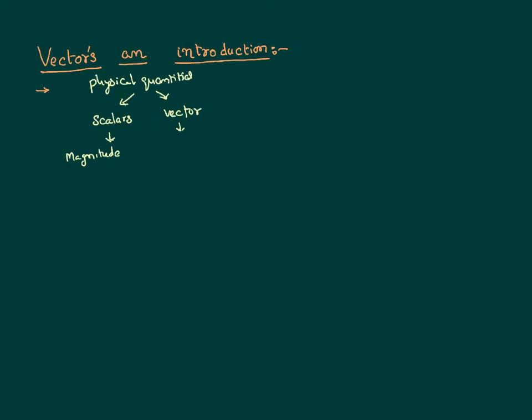But if somebody gives the direction to a house address, we have to say not only a magnitude — that you have to walk five kilometers — but we also have to say a direction: walk along east, take a left, take a right. So some physical quantities demand both magnitude as well as direction. Those physical quantities which demand both magnitude and direction are treated like vectors. They are actually needed to understand physics, because some physical quantities demand not only a magnitude but also a direction — that kind of quantity is called a vector.